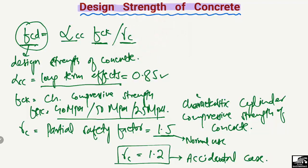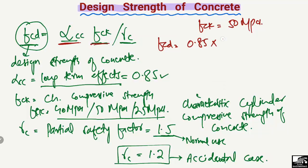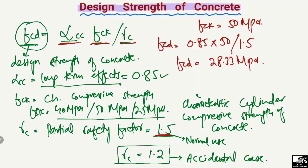For example, if the concrete strength obtained from the laboratory is 50 megapascals, how do we find the design strength? We multiply αcc (0.85) by the characteristic strength (50) and divide by γc (1.5 for persistent or transient cases): fcd = 0.85 × 50 / 1.5.